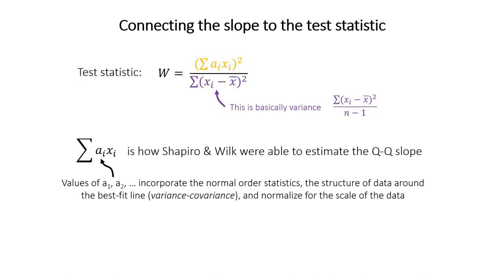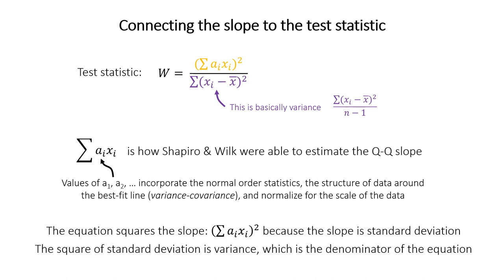Right? So basically, this thing on the top, the sum of a times I, is an estimate of the slope of a QQ plot. So Shapiro will demonstrate that mathematically. And remember, the slope is equal to the standard deviation, if the data are normally distributed. So that's why this numerator part is squared. Standard deviation squared is equal to variance.